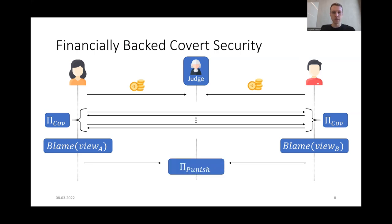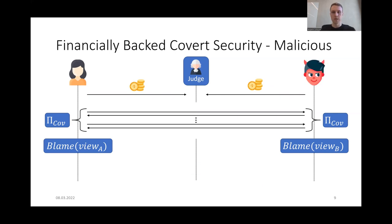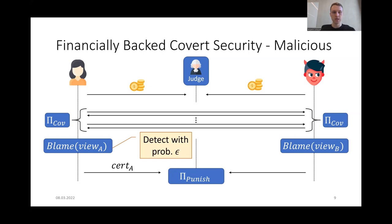In case no malicious behavior is detected, the parties execute a so-called punish protocol which, due to no cheating having occurred, simply sends back the security deposits to the honest parties. In case there is a malicious party, the covertly secure protocol will detect cheating with a fixed probability. In this case, the output of the blame algorithm will be a certificate used as input to the punish protocol. At the end of the punish protocol, which might require interaction between the parties, the security deposits are only sent back to the honest parties. The security deposits of the malicious party will be burnt.